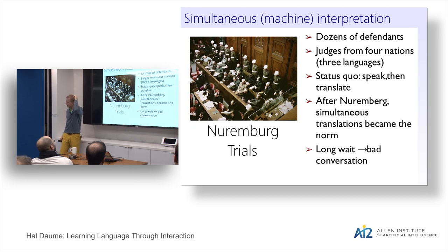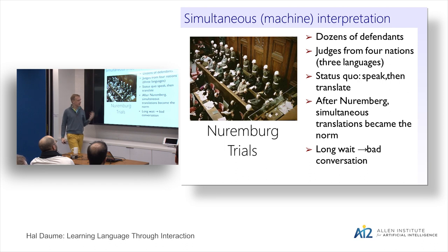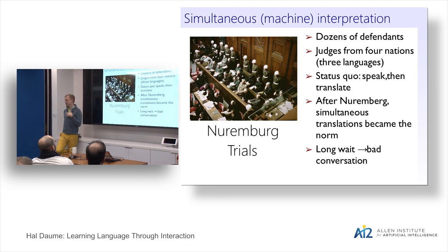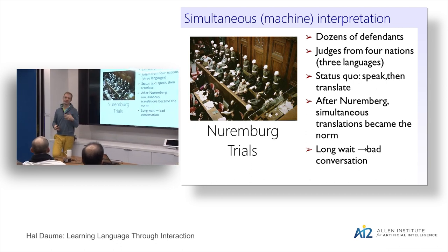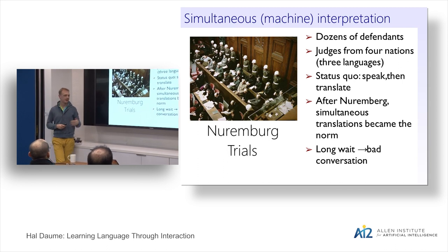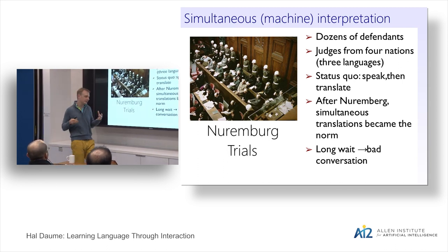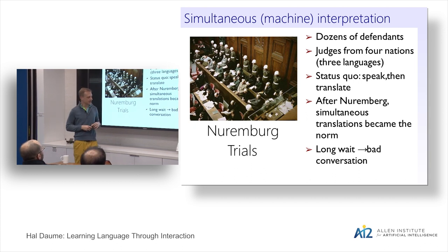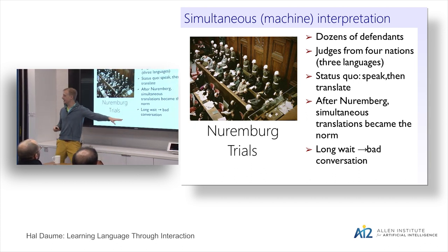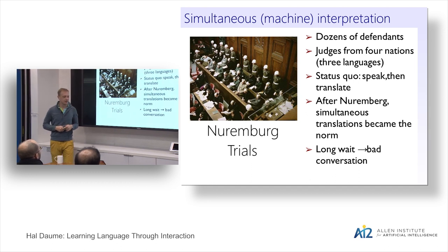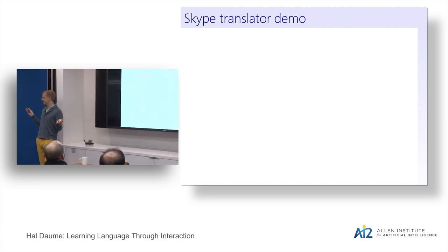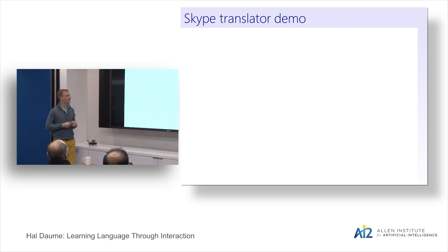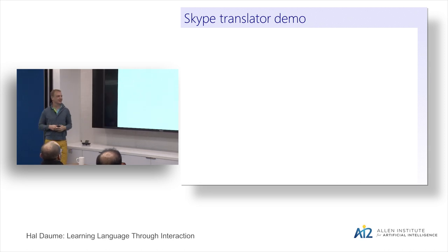Simultaneous interpretation started at the end of World War II with the Nuremberg trials. The previous model was consecutive interpretation — someone says a sentence, finishes it, then it gets translated, and so on — and they figured that would take forever. So they invented simultaneous interpretation to reduce delay and make conversation more natural. I want to show an example from a Skype Translate video — Skype Translate is awesome, but I'm going to pick on them.